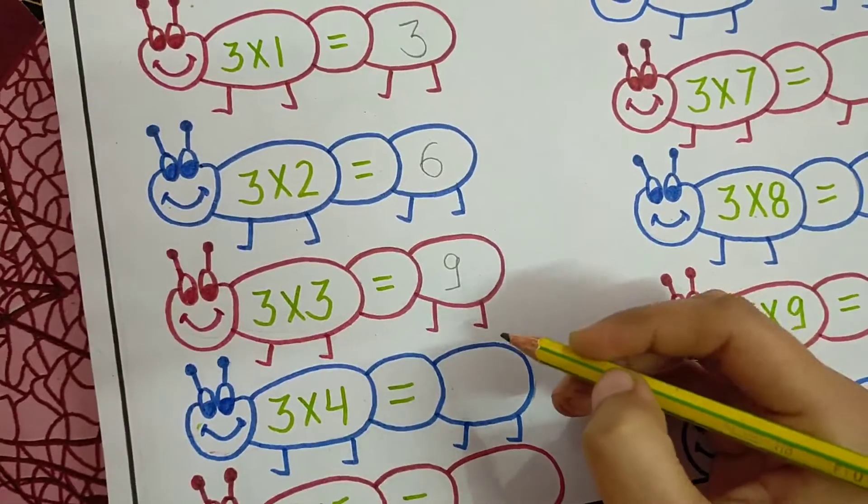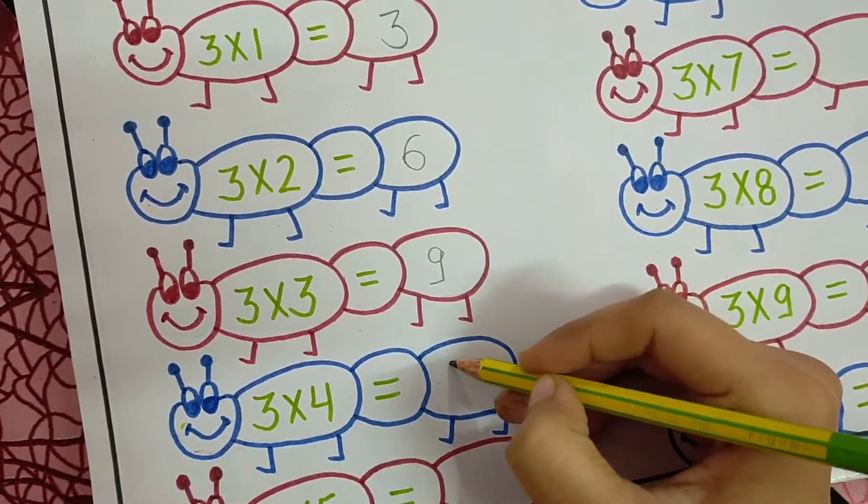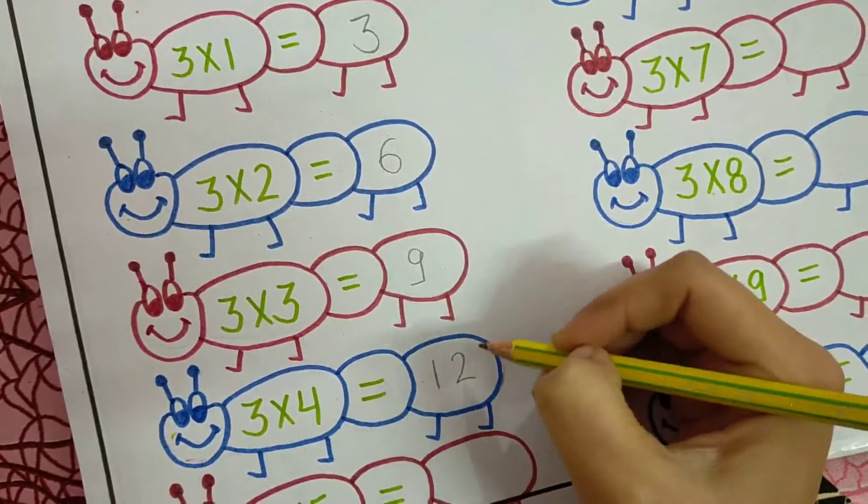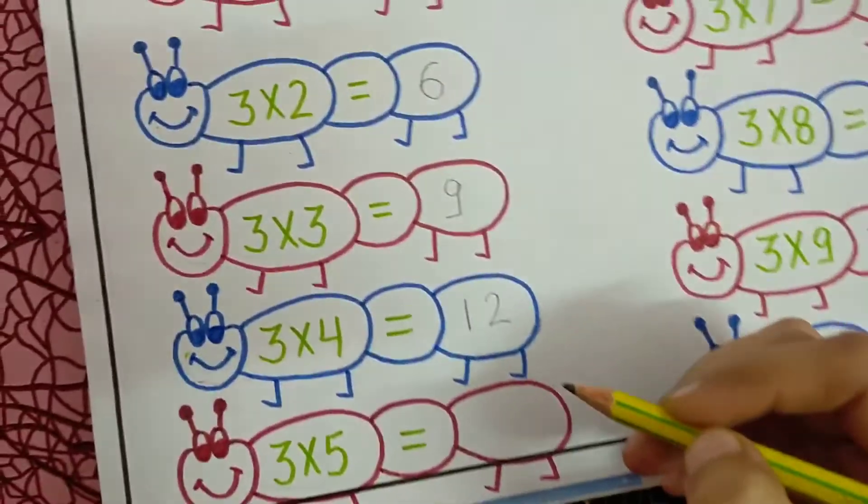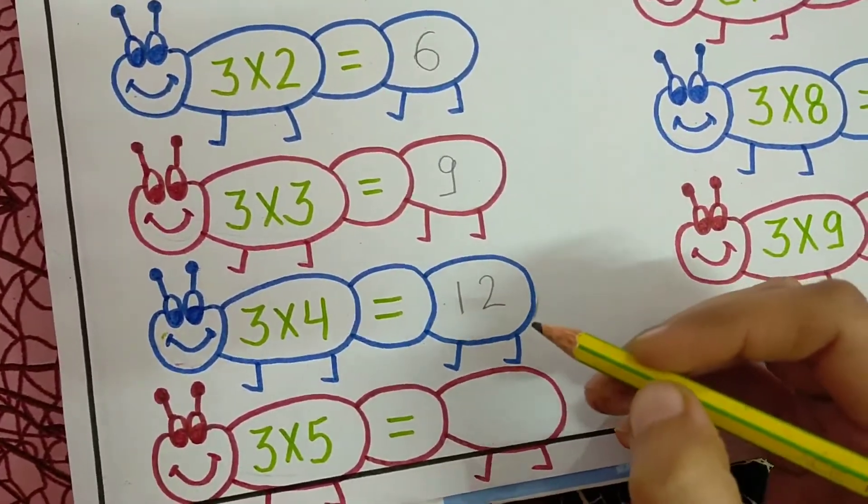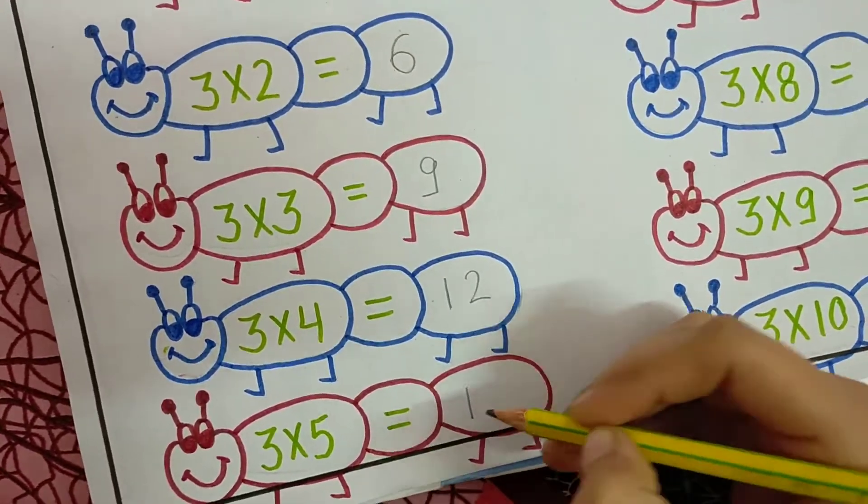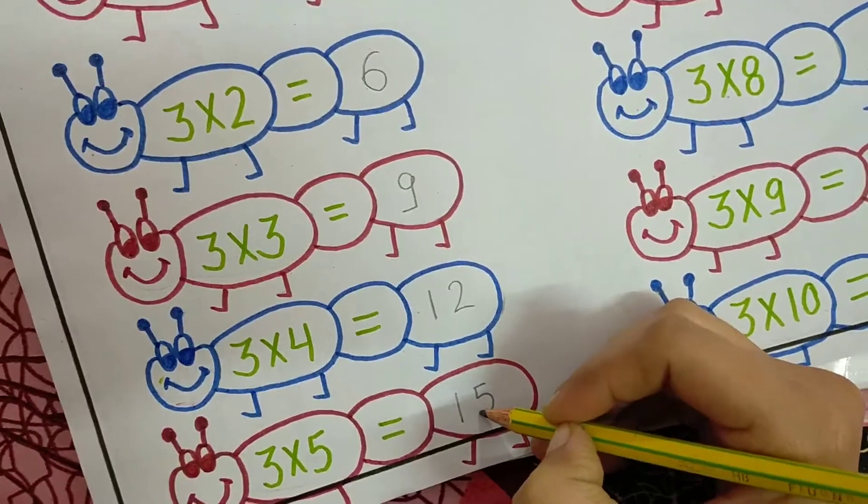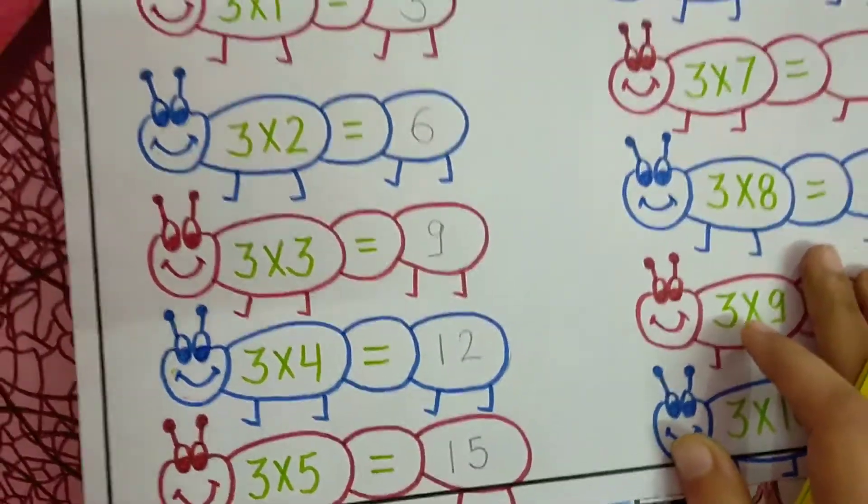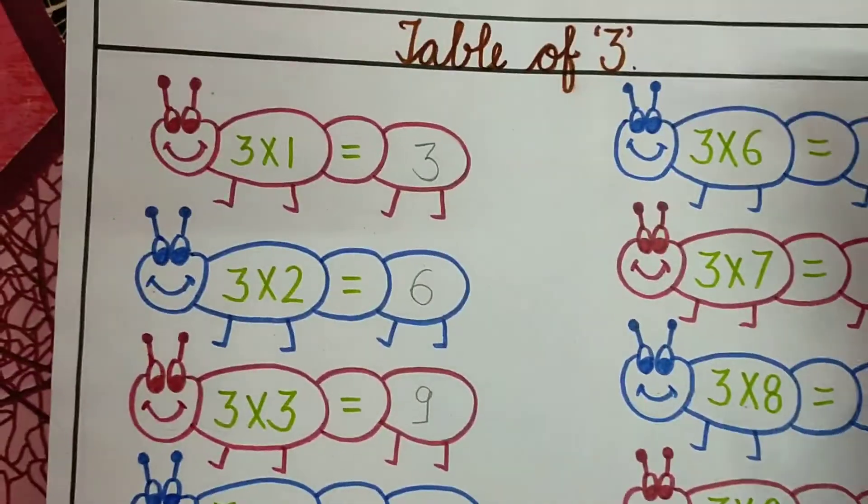3 times 4 equals 12. 1, 2, 12. 3 times 5 equals 15. 3 times 6 equals 18.